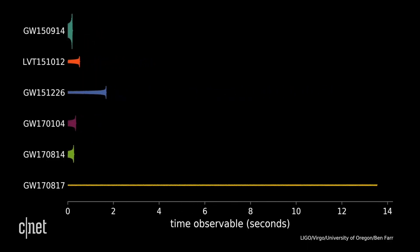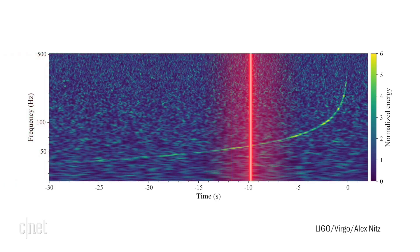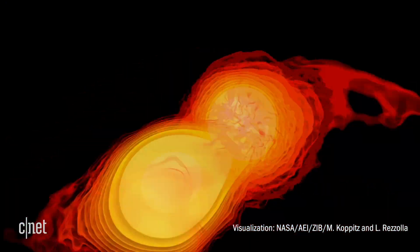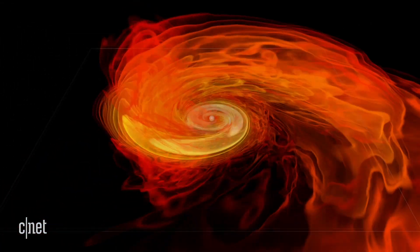These observations baffled astronomers who had never seen deep space signals like this before, but the data they were receiving was consistent with a theory of what might happen if two neutron stars merged.